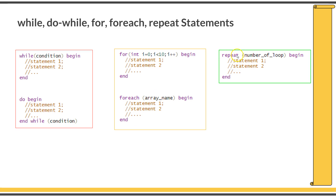The repeat statement is similar to a for statement. You say repeat followed by the number of times — which can be an expression or a number — and within a begin-end block, the list of statements. These statements will be repeated that many times as specified. These are the looping statements available in SystemVerilog.